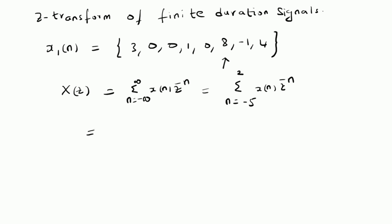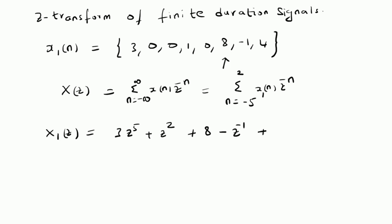By using the actual values of X1 of n, we can see that the Z transform X1 of Z will be equal to X1 of minus 5, that is 3 multiplied by Z power 5, plus 0 plus 0 plus 1 into Z power 2. Z power 4 and Z power 3 have coefficients 0. So we have Z power 2, then Z power 1 has 0 coefficient, then 8 into Z power 0, minus Z power minus 1, and plus 4 times Z power minus 2.